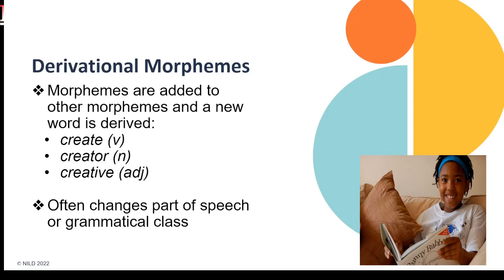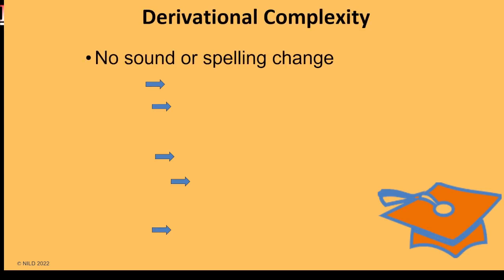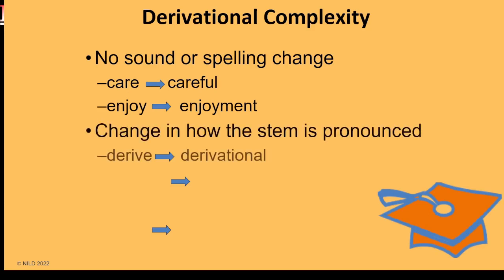Derivational morphemes are morphemes added to a base word or another morpheme that creates a new word that is a different part of speech, such as in the word 'create,' which is a verb. We add '-or' — now we have 'creator,' a noun — and then '-tive' — 'creative' — which makes the word an adjective. Derivational morphemes often change parts of speech, such as when adding '-ness' to the adjective 'careless' to produce 'carelessness,' which is a noun. Educators must be aware of derivational complexity to use morphology as a tool to assist students in improving reading, spelling, and vocabulary.